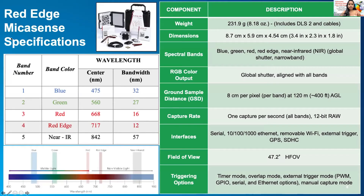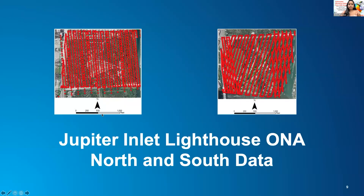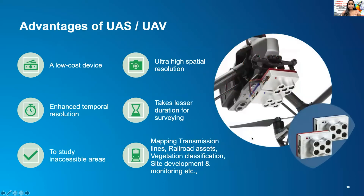We used the RedEdge MicaSense for data collection and its specification is given here in this table. The wavelength can also be seen here for each band of the RedEdge MicaSense sensor. Data was collected separately for two different regions, north and south, in the Jupiter Inlet Lighthouse ONA. I have listed a few notable advantages of the UAS — it's a low-cost device, it accesses even inaccessible areas, and it takes very little duration for the survey.